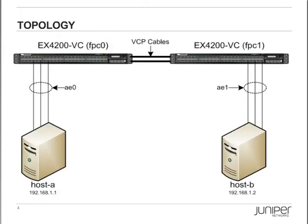Let me demonstrate this for you using the topology you see on the screen. This is a very simple topology. There are two EX4200 switches connected in a virtual chassis. FPC0 is the master RE, and FPC1 is the backup RE. There are two hosts connected to the same VLAN on the virtual chassis. Both are connected with multiple interfaces, which form an aggregated Ethernet bundle. Both bundles are managed by the Link Aggregation Control Protocol, or LACP. Finally, the EX4200s are running the rapid spanning tree protocol on both aggregated Ethernet interfaces.